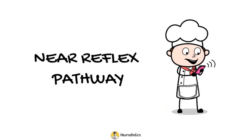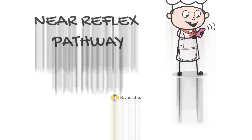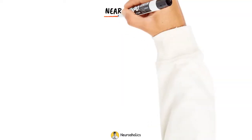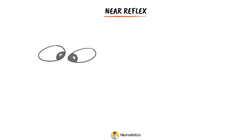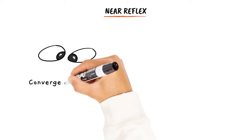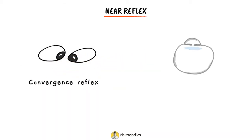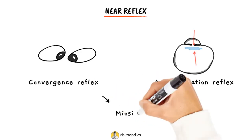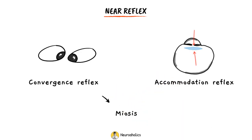Near Reflex Pathway. In this video, we'll talk about the anatomy of the near reflex. When you look at a close object, you get a near reflex. It is made up of two parts: a convergence reflex and an accommodation reflex. The convergence reflex is characterized by convergence of the visual axis of the eyes as well as pupil constriction or miosis. The accommodation reflex consists of increased accommodation and associated constriction of the pupil.